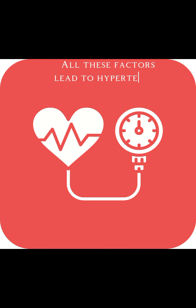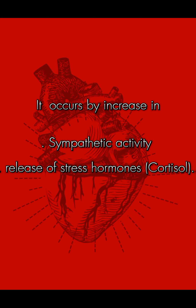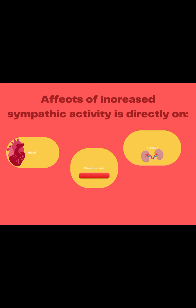All these factors lead to hypertension, known as neurogenic hypertension. We will discuss how these factors cause hypertension. It occurs through an increase in sympathetic activity and release of stress hormones such as cortisol. All psychological factors increase sympathetic activity, which affects mainly the heart, blood vessels, and kidneys.